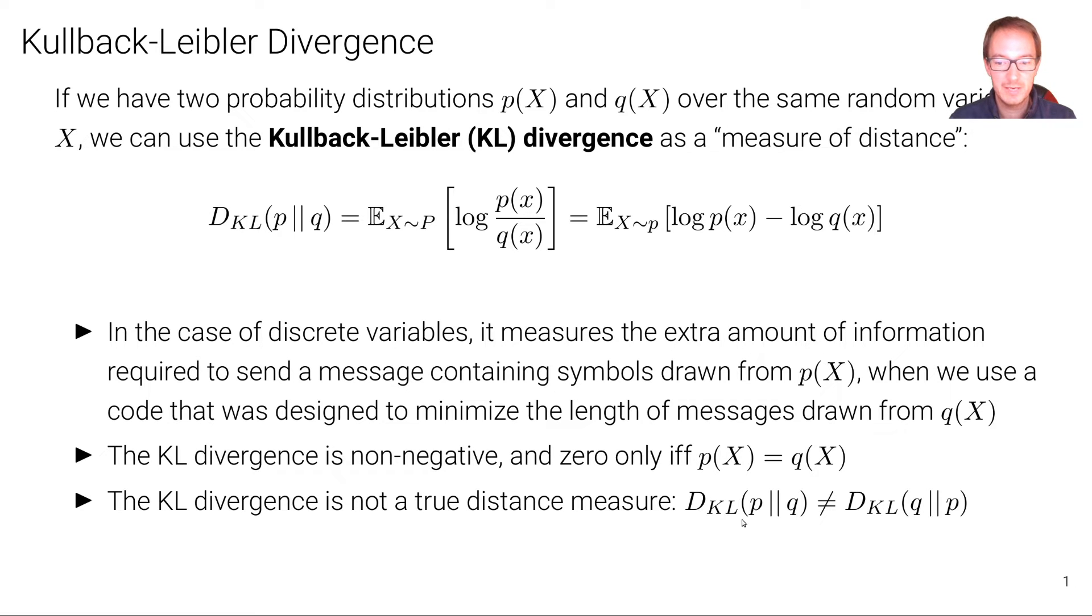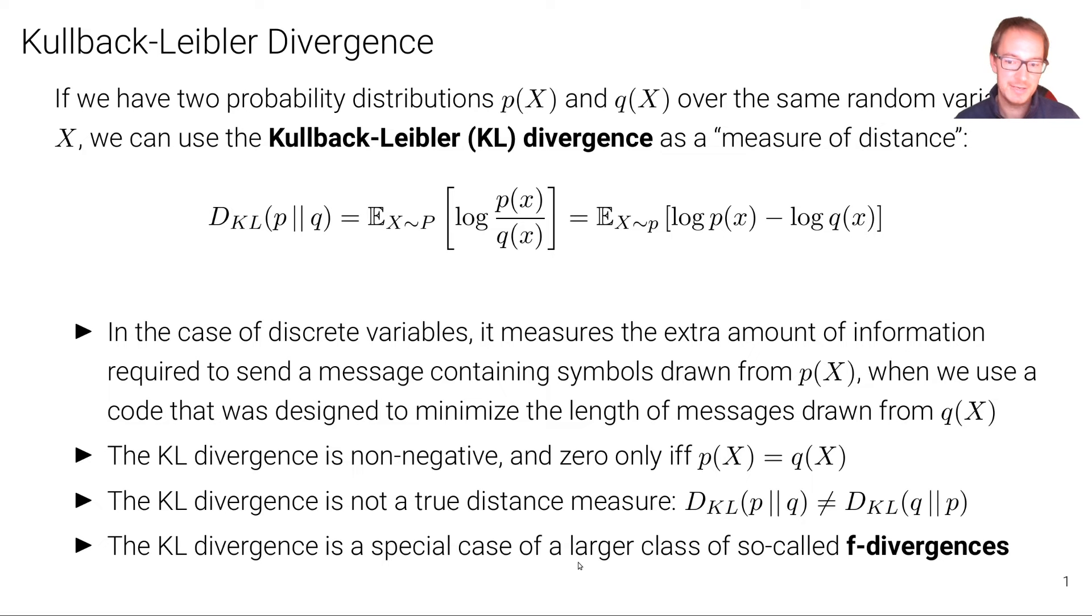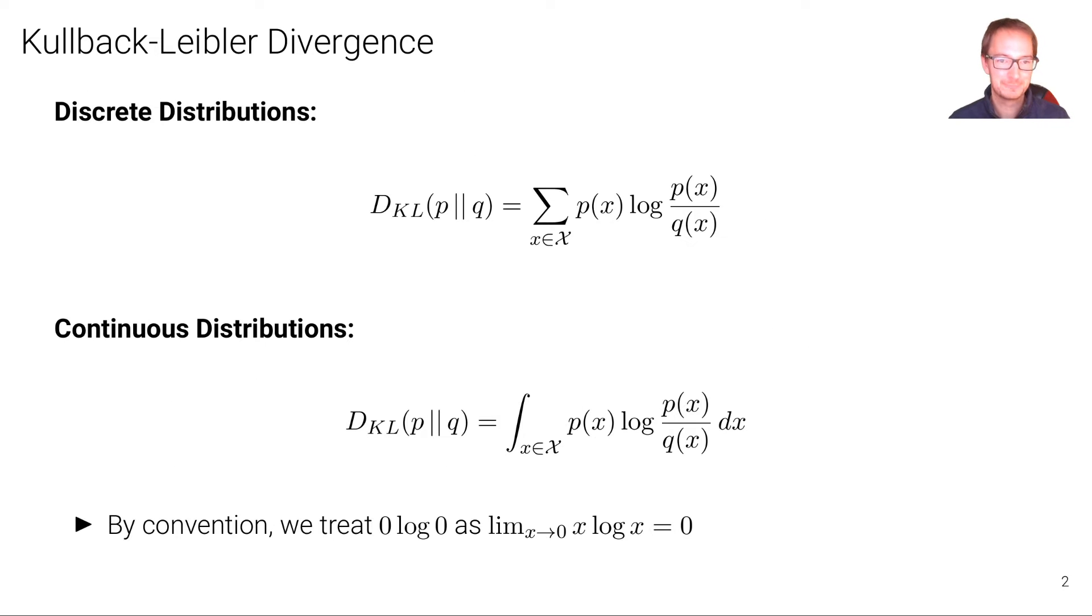In other words, D_KL(p||q) is not the same, or not necessarily the same, not always the same, but in general not the same as D_KL(q||p). Also, there's more divergences than just the KL divergence. The KL divergence in particular is a special case of a larger class of so-called F divergences. But we'll not cover them here in this short recap.